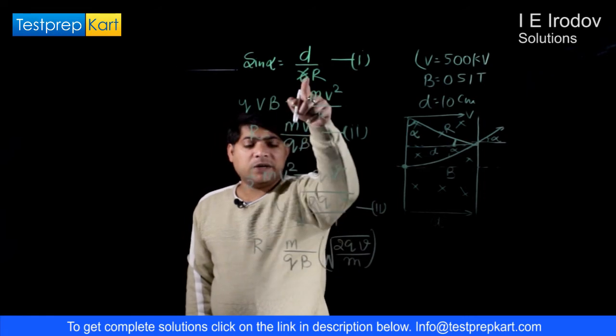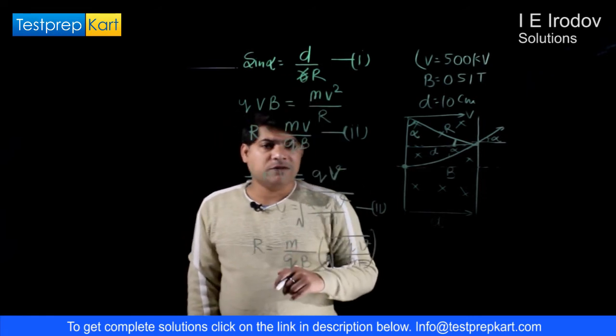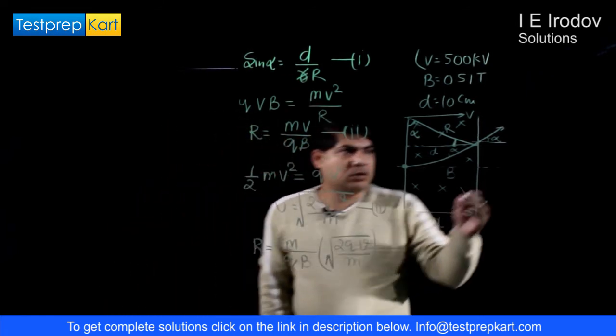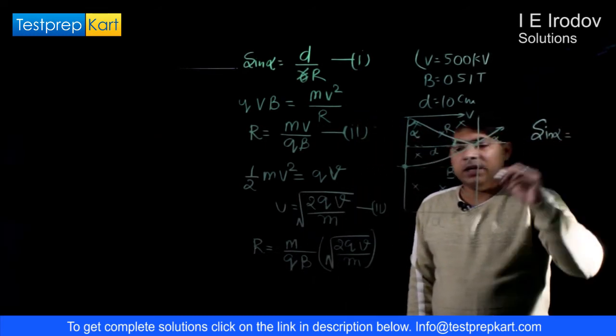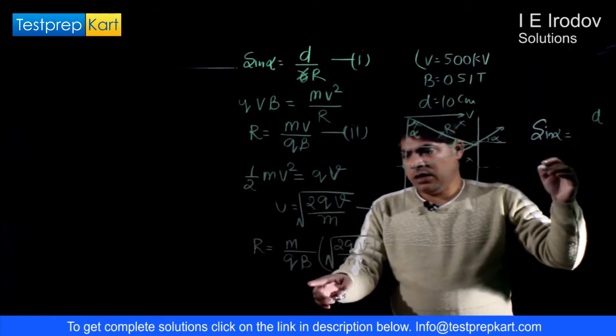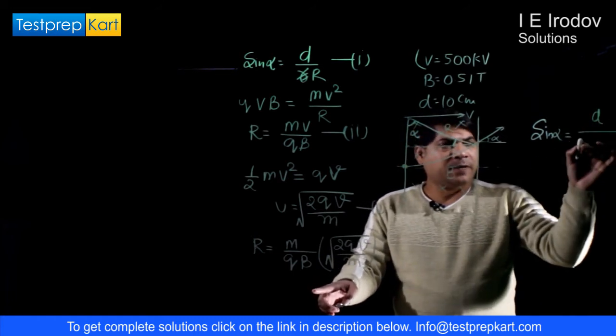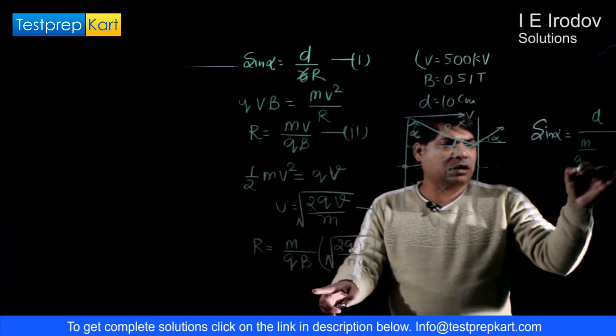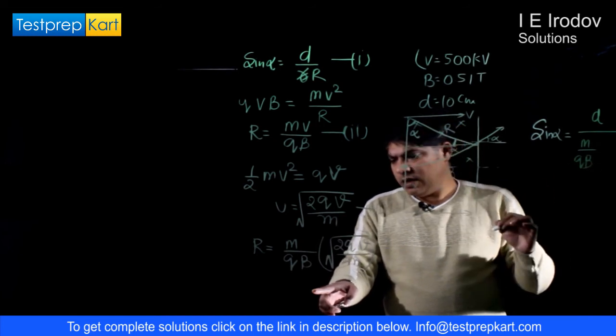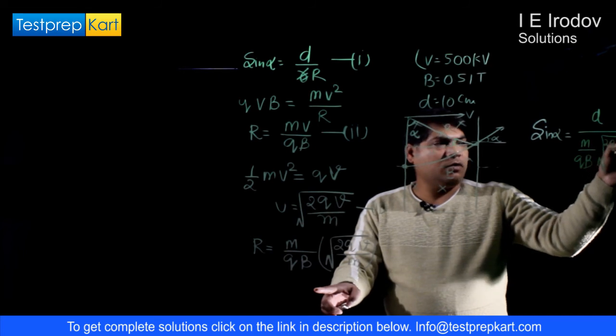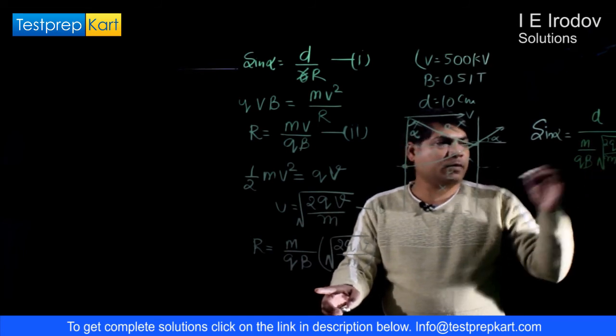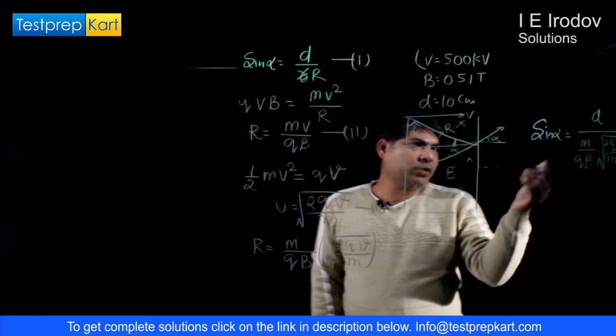Now we can substitute in equation number 1 to get the sin alpha. So sin alpha would be equal to D divided by M over QB times square root of 2QV over M.